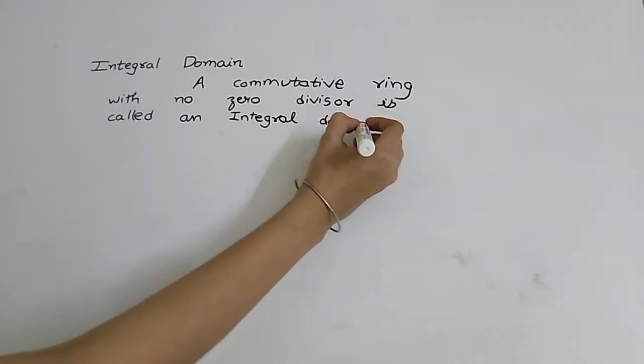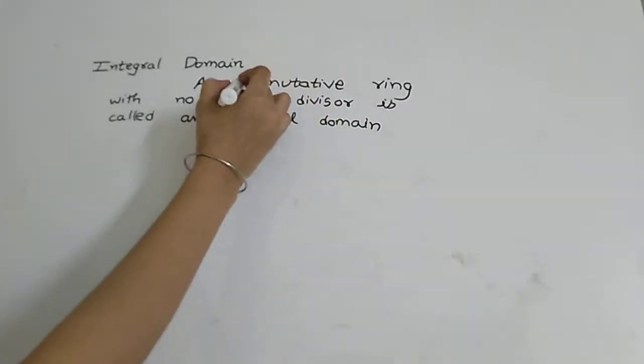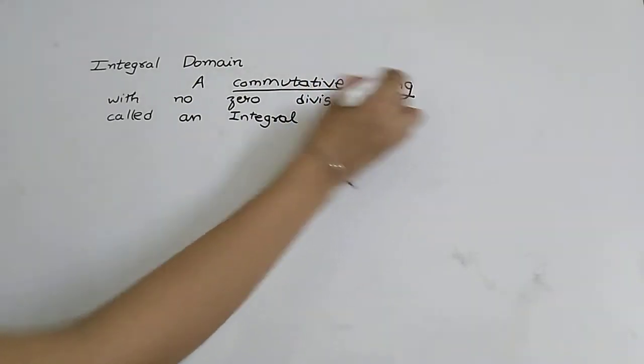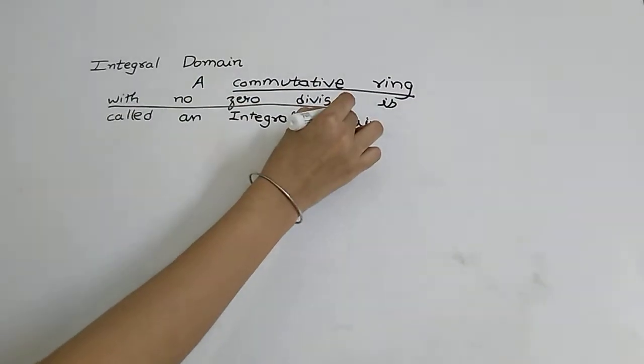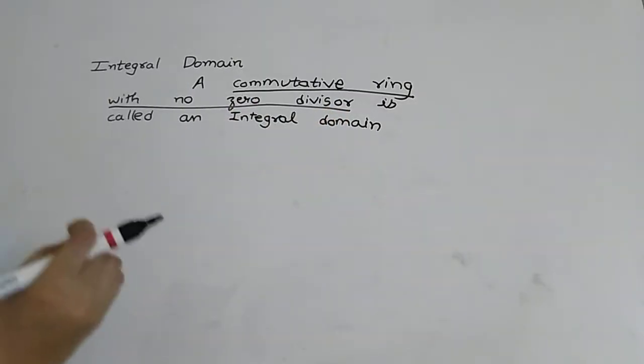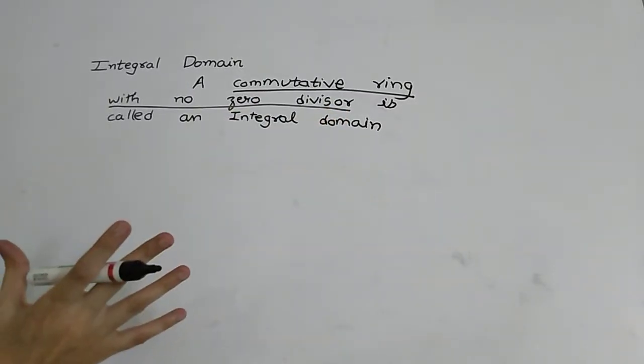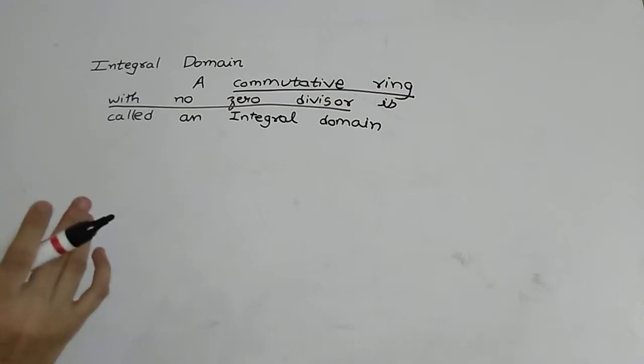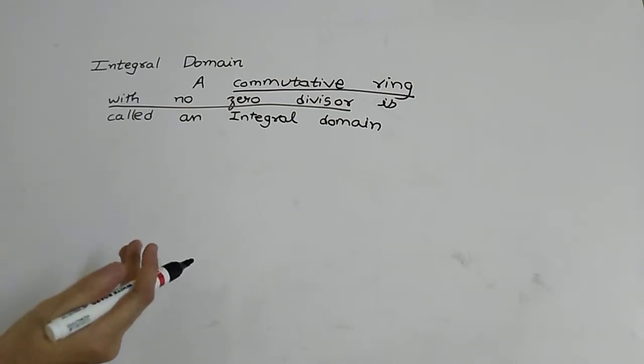So integral domain should be a commutative ring with no zero divisor. With no zero divisor means it should be a commutative ring without zero divisor, and without zero divisor is a concept property we have discussed in previous videos.